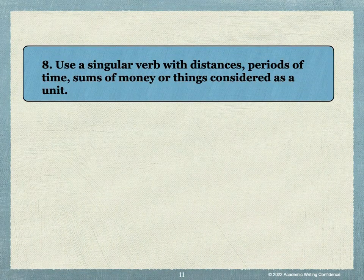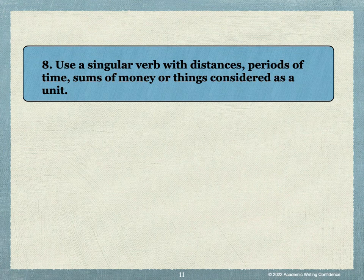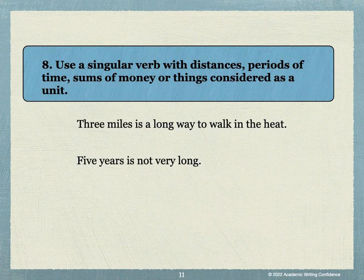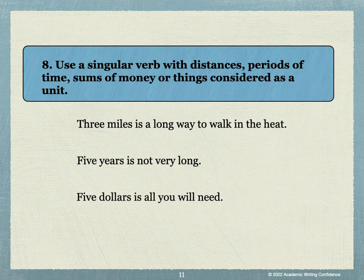Another area where subject-verb agreement can become difficult is when we talk about distances, periods of time, sums of money, or things considered as a unit. For example: Three miles is a long way to walk in the heat — three miles is a unit of distance. Five years is not very long — five years is a period of time. Five dollars is all you will need — this is an example of a sum of money. Whenever the subject is considered as a unit, use a singular verb.